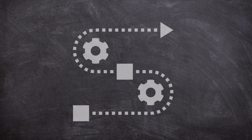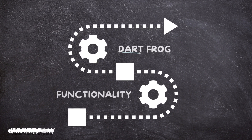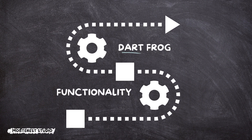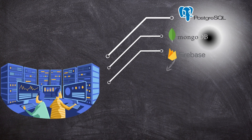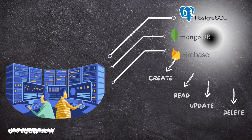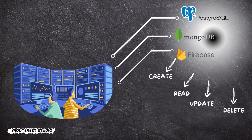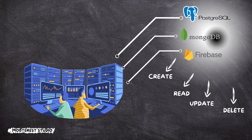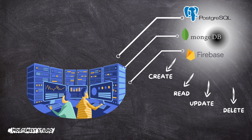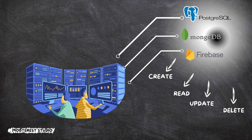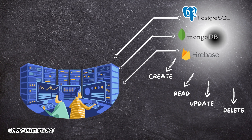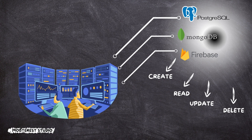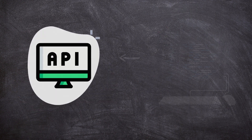By the end of this tutorial, we'll also learn how to implement the core functionalities of Dart Frog. We'll cover topics like routes, middleware, and dependency injection that will make the app come to life. We'll discover how to integrate databases into the app to store and retrieve data in Dart Frog — we'll explore Firebase and MongoDB, which are cloud NoSQL databases, and PostgreSQL, which is a relational database.